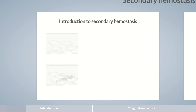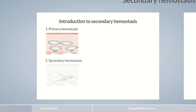In the previous episodes, we've learned that primary hemostasis results in the formation of a loose thrombus, also termed a platelet plug. The platelet plug is then stabilized by the coagulation cascade of secondary hemostasis. This is achieved by cross-linking the fiber network to the platelet plug, a process driven by clotting factors.